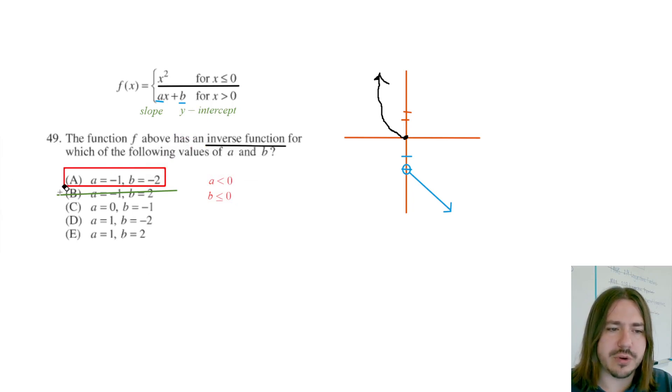I know this was a little bit of a challenging problem, but as long as you know what it means to be an inverse and what it means to be an inverse function, I would suggest sketching out the graph and just using the horizontal line test is probably the easiest way to do this one. So that's it for 49. Hope you all enjoyed the video. Have a great day. Bye-bye.